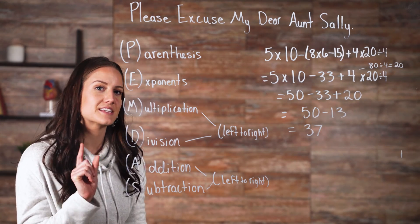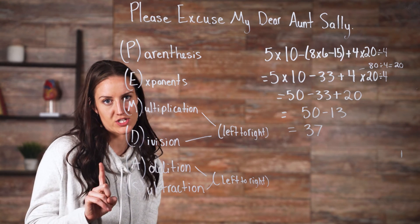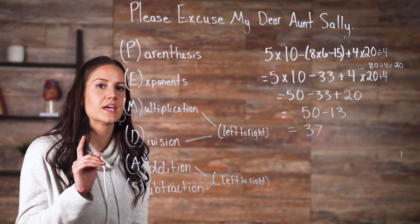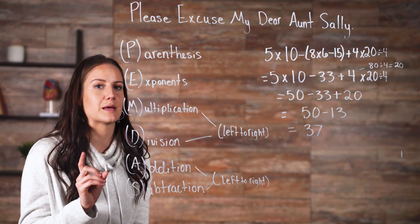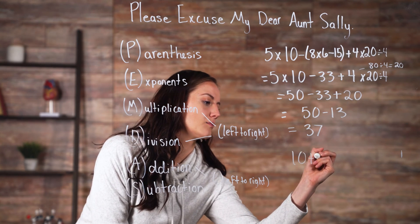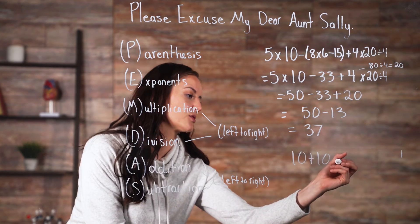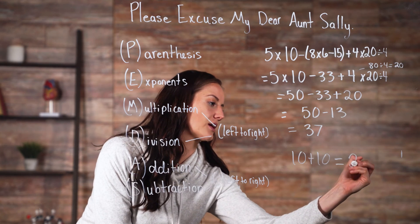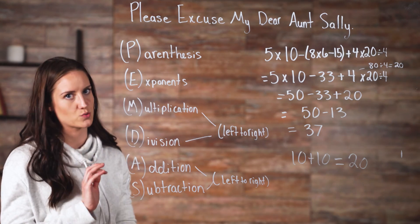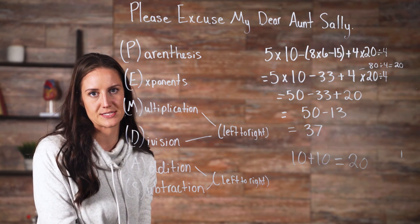There is an exception. If an equation only has one expression, you don't have to follow the order of operations. Here are some examples of single expressions: 10 plus 10 — there are no other operations, so you just add them together and get 20. The same applies to subtraction, multiplication, or division. All of those are single expressions.